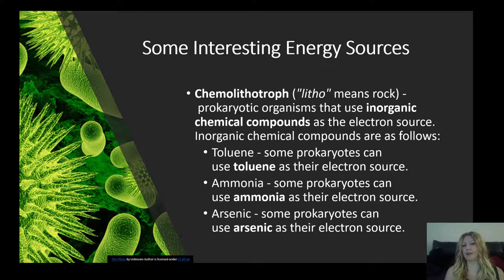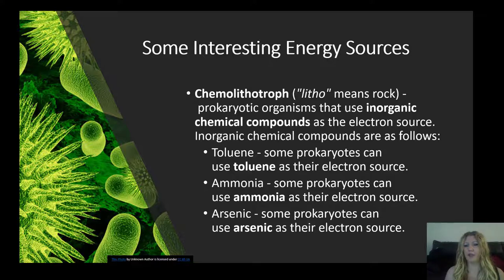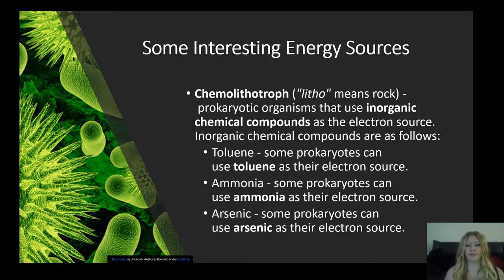Chemo-lithotrophs can use inorganic chemical compounds as their electron source — some of which are extremely toxic to other life forms, such as toluene (an industrial solvent), ammonia (used as a cleaner), and arsenic (a human poison).